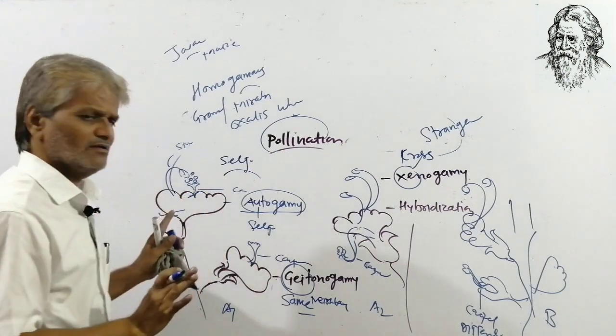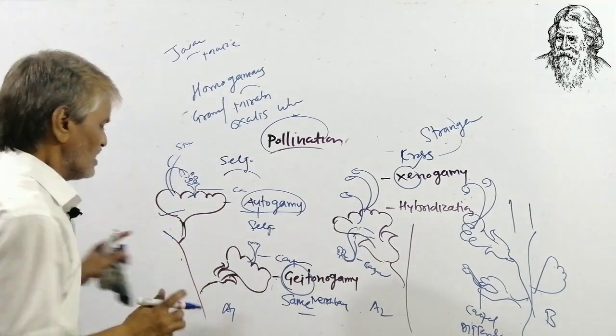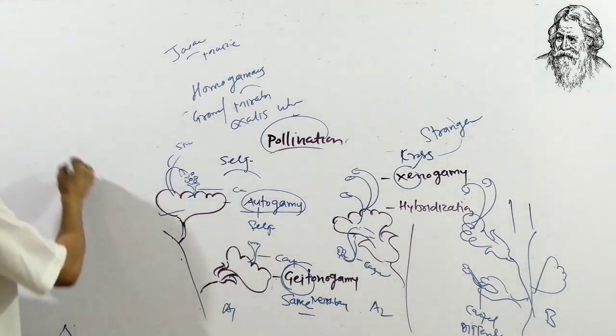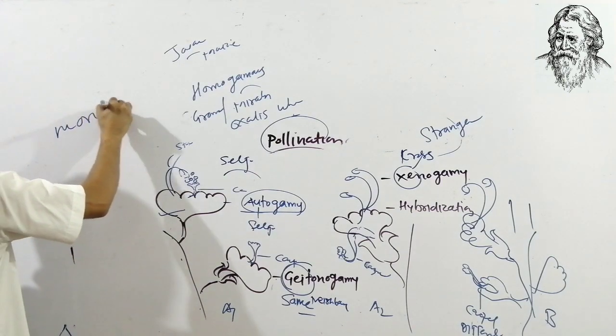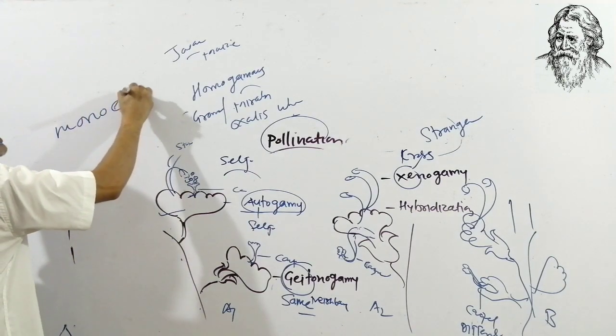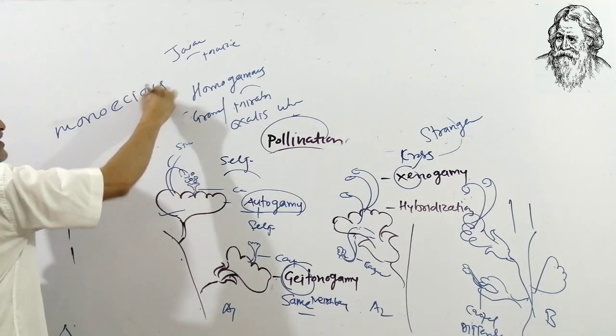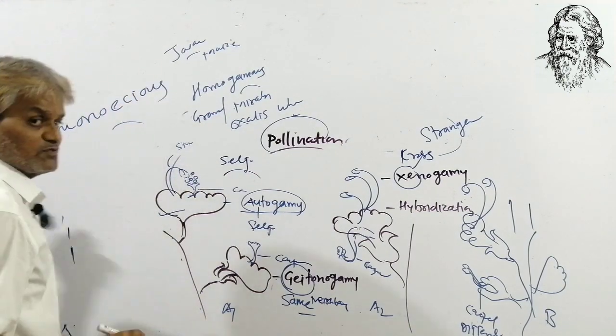Geitonogamy is generally seen in monoecious plants — those plants which have both male and female reproductive organs on the same plant.